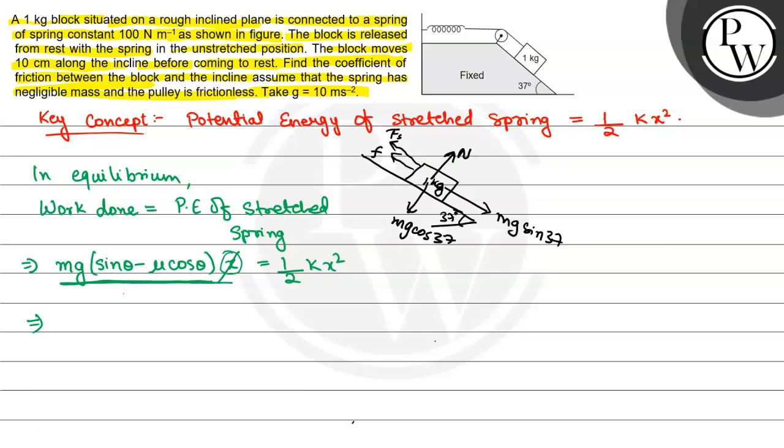From here, x will cancel. So 2 Mg sin theta minus mu cos theta equals kx.